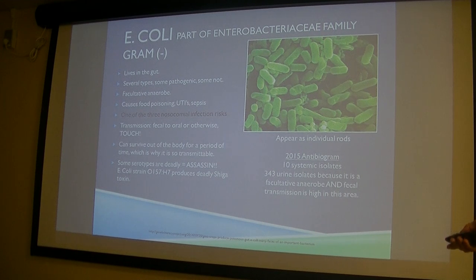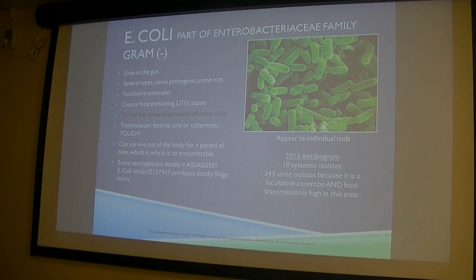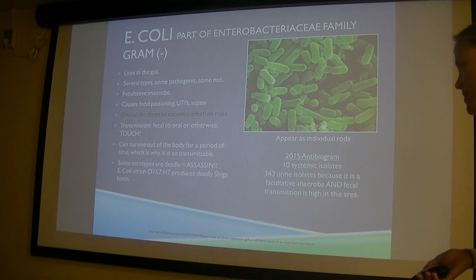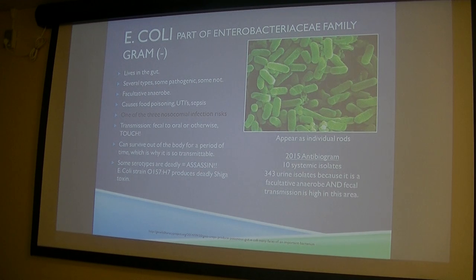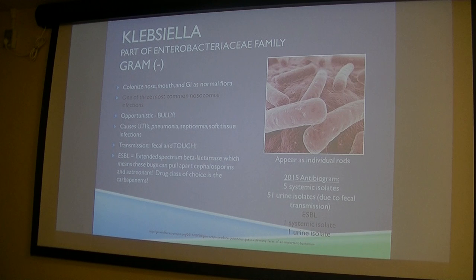E. coli is one of the three highest nosocomial infection risks we have in the hospital — C. diff is another one. E. coli can survive outside the body for a period of time, which is why it's so transmissible. Some serotypes are deadly; the O157:H7 serotype produces deadly Shiga toxins. When the microbe is falling apart, it creates an endotoxin — actually more dangerous than the living microbe itself.